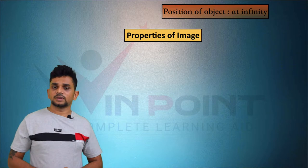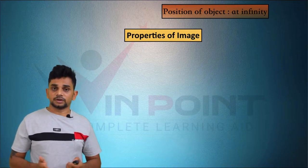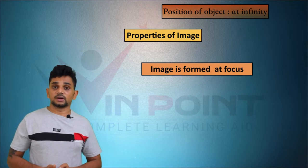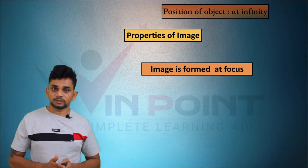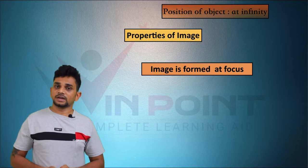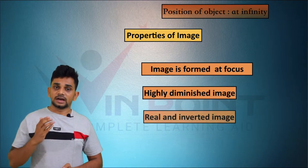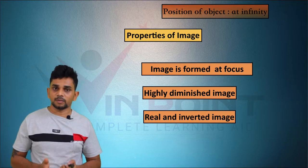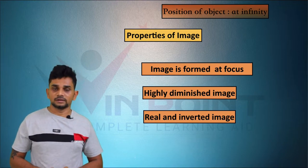The image formed is highly diminished, real, and inverted, and it is formed at F2. Properties of the image: position of object is at infinity, image is formed at focus, it is a real and inverted image, and it is highly diminished. These are the properties of the image formed by a convex lens when the object is at infinity.